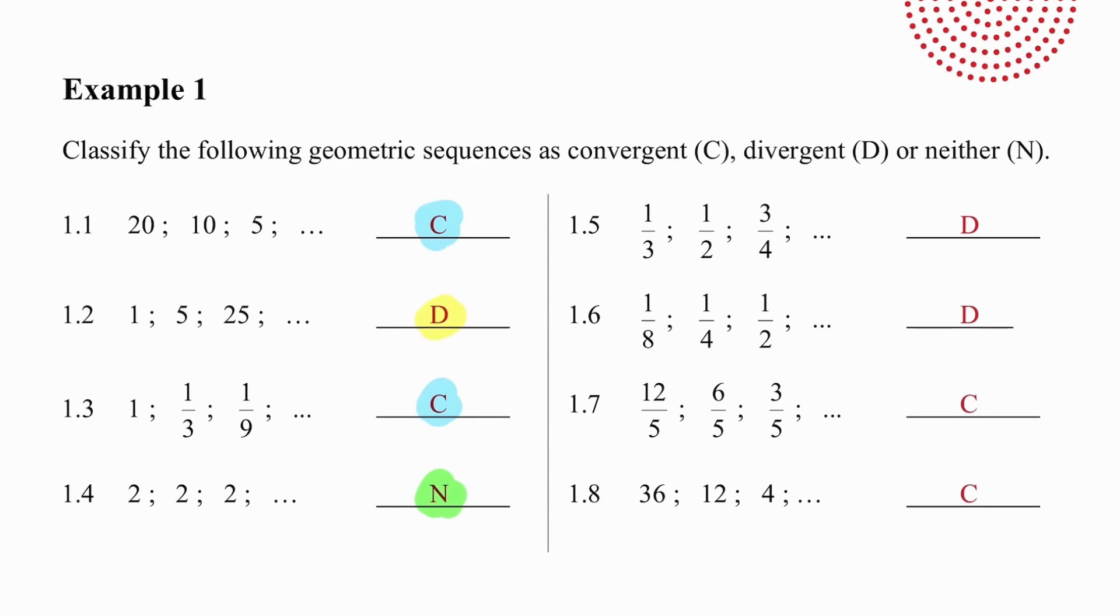In example 5, the sequence is divergent because the ratio is three over two. In 1.6, the sequence is divergent because the ratio is two. In 1.7, the sequence is convergent because the ratio is a half. And in 1.8, the sequence is convergent because the ratio is a third. Pause the video and take another look if you need to.